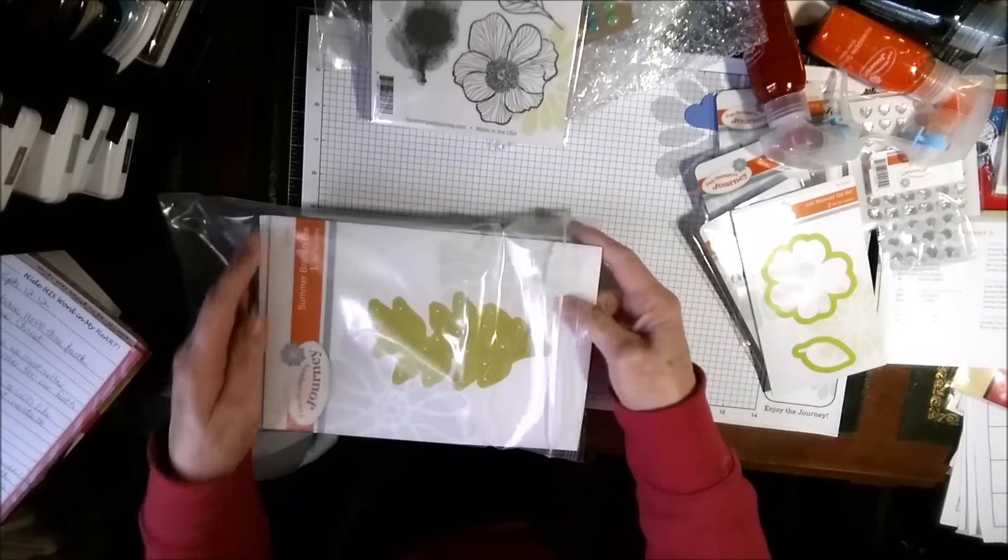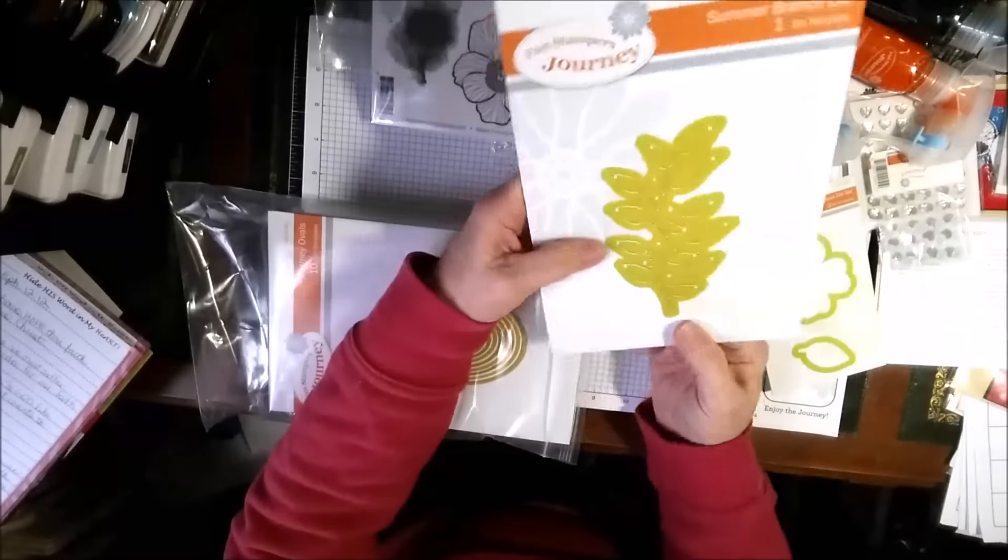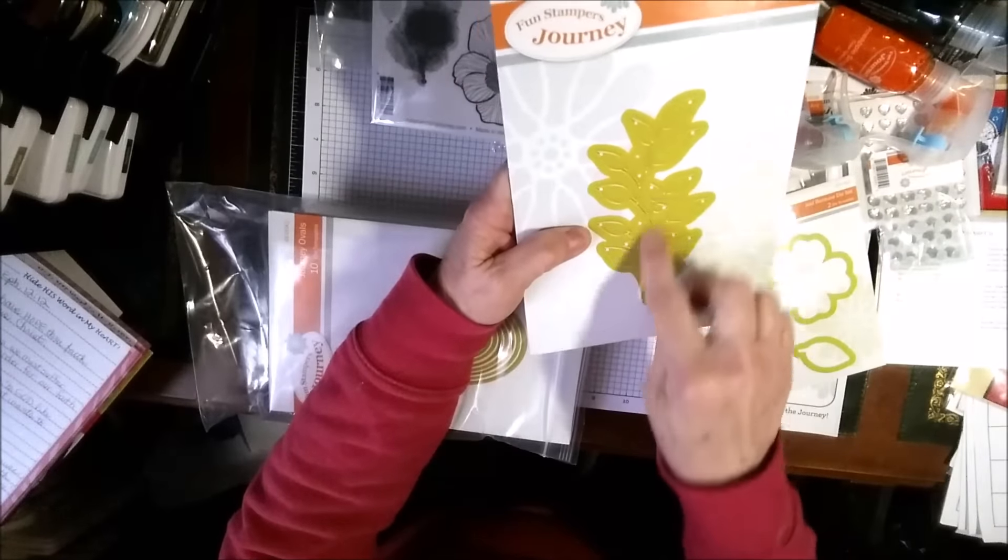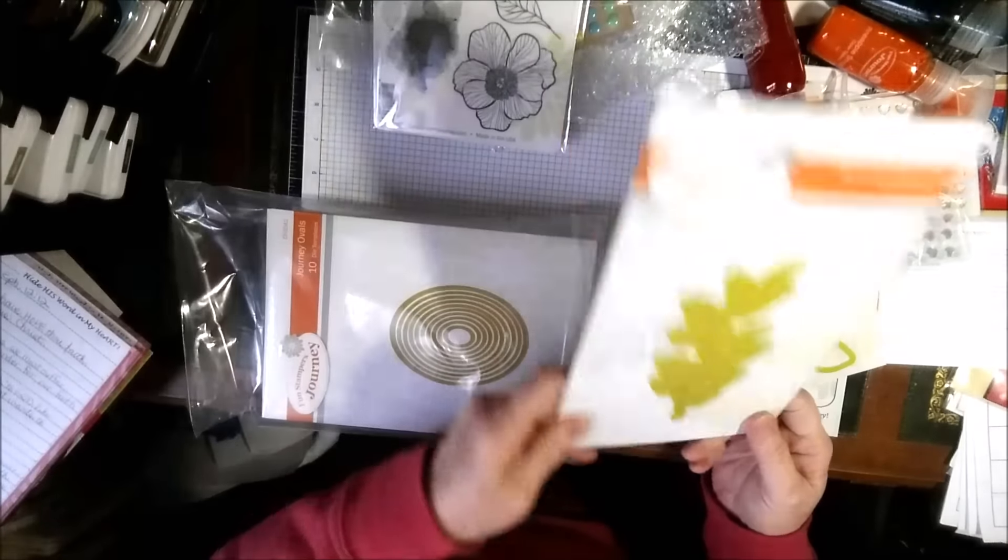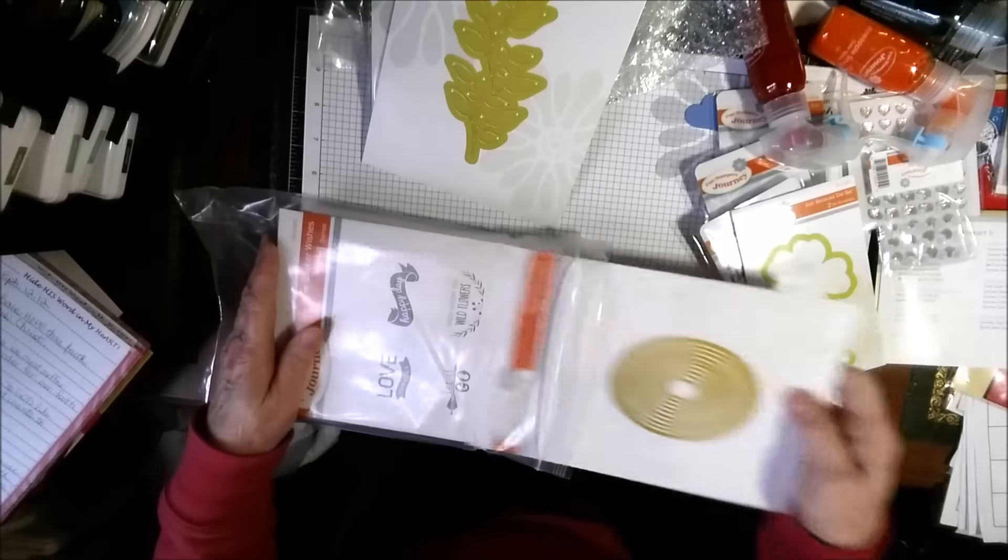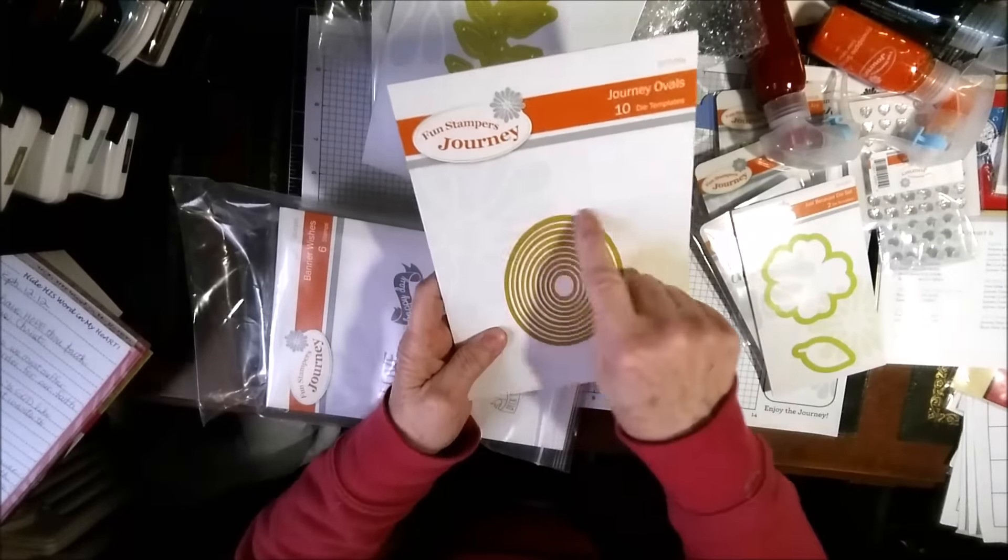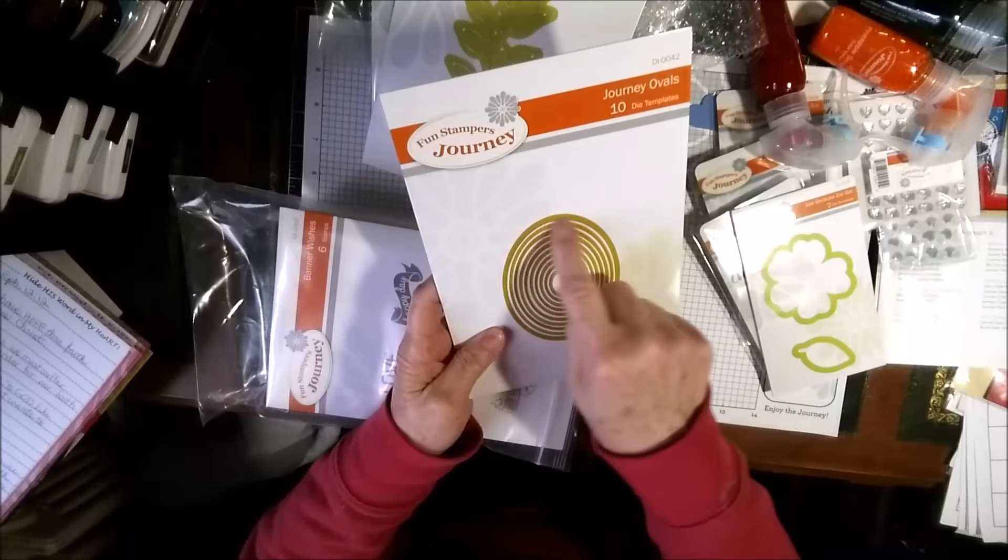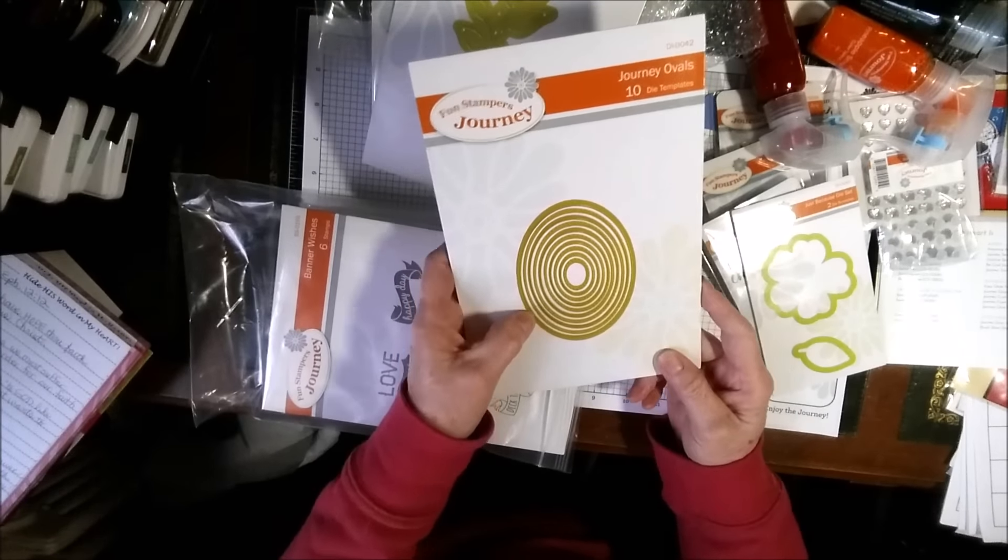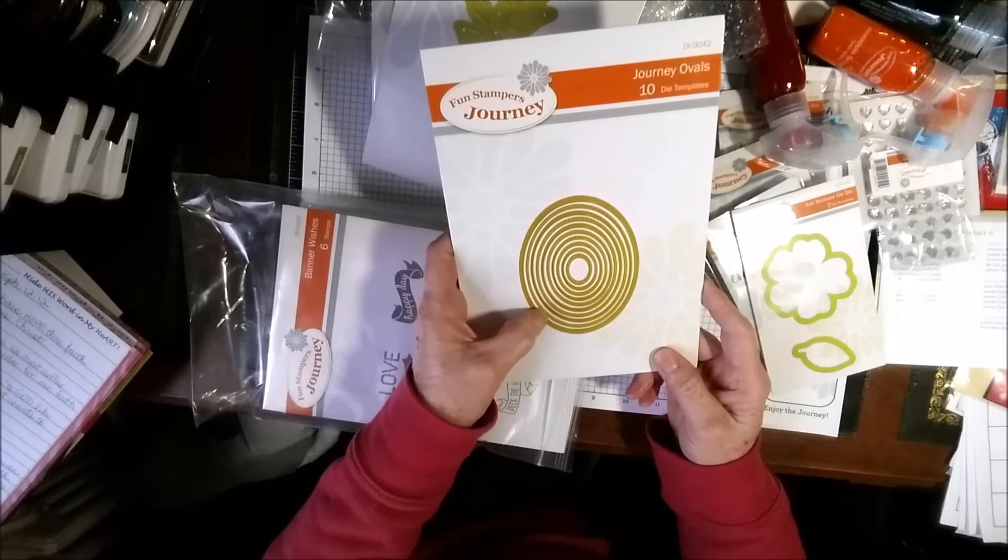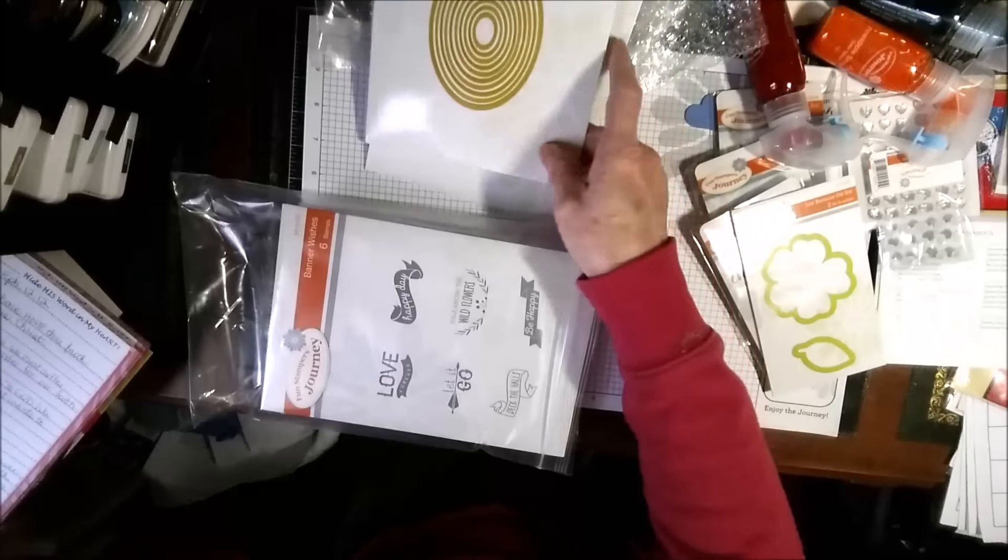I got this die. Which is the summer branch. And it makes a beautiful leaf branch. That can be used with the flower dies. So I got that. I got the pierced ovals. They're just called journey ovals. But they have the cutting die. And then they have a piercing element that goes with it. So you can have, cut just the oval. Or you can cut the oval with the piercing. So you can do any way you wanted. So I got that die.